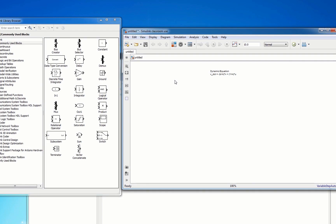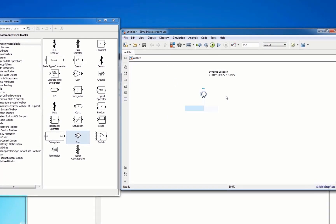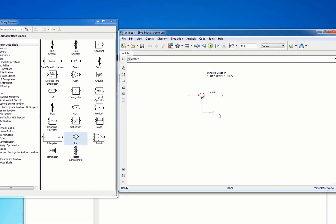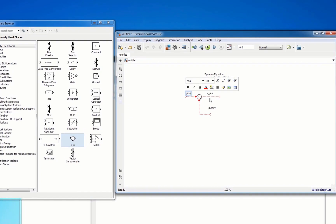Simulink is a graphical programming environment that's built into MATLAB. It's primarily used for modeling, simulating, and analyzing dynamic systems.